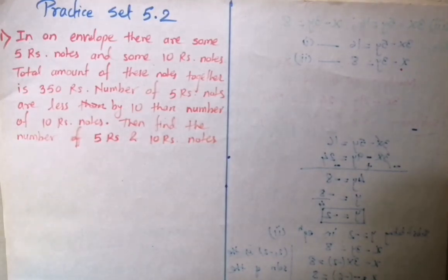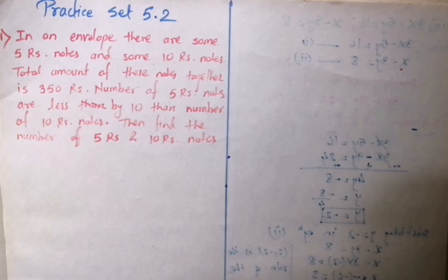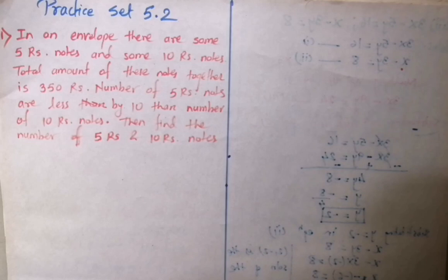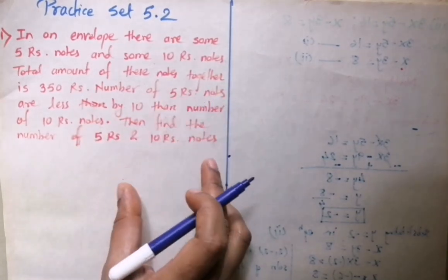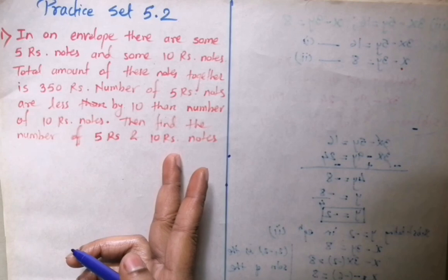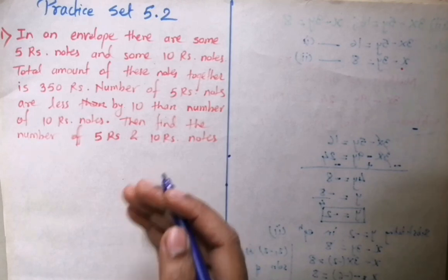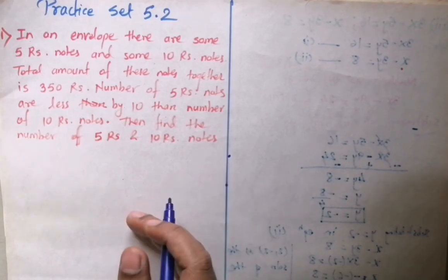Now students, let's begin with practice set 5.2. This 5.2 is based on word problems. First, we understand the word problem and derive two simultaneous equations. In the previous practice set 5.1, a simultaneous equation was already given, and using the elimination and substitution methods we found the values of x and y. In this practice set, we first understand the word problem, derive the simultaneous equations, and then find their solution.